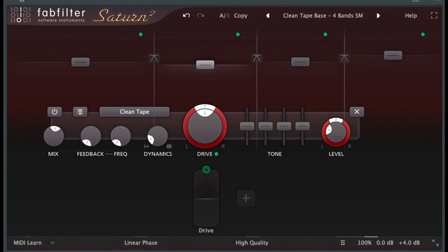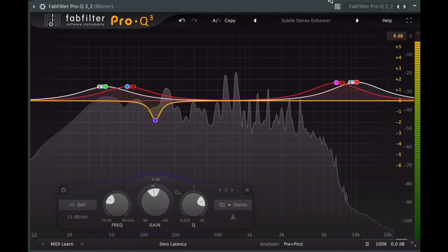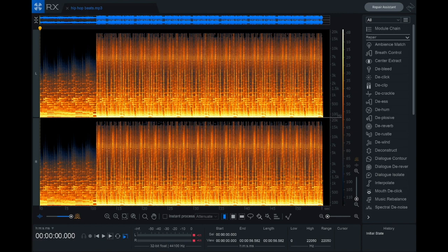Spectrograms are perhaps one of the most useful representations of sounds for a music producer. Nowadays, you see them integrated into almost every plugin: saturation, maximizers, EQs, reverbs, audio manipulation plugins, and even audio visualizations.